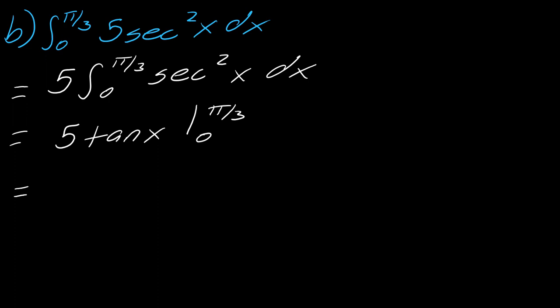So now you're just going to plug everything in. So I'm going to have 5 times the tangent of pi over three minus 5 times tangent of zero. And so this will really just give you 5 times the square root of three. And so that's it.